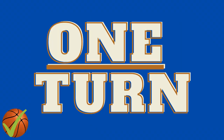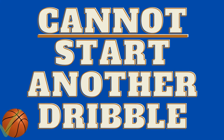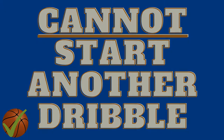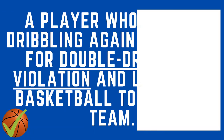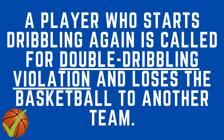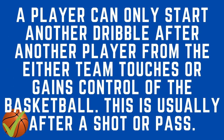Next, the player can only take one turn in dribbling. In other words, once you stop dribbling, you cannot start another dribble. A player who starts dribbling again is called for a double dribbling violation and loses the basketball to the other team. A player can only start another dribble after another player from either team touches or gains control of the basketball.